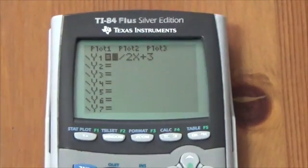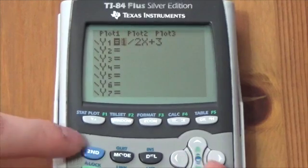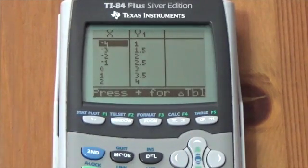On my calculator, I've got 1/2x + 3. And I can go and look at my table of values here, second table, and there's our table of values.